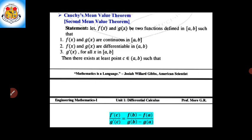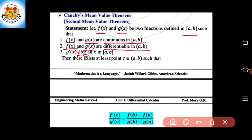Before that, we will revise the statement of Cauchy's Mean Value Theorem. Here, f(x) and g(x) are two functions defined in the closed interval [a, b], such that f(x) and g(x) are continuous in the closed interval [a, b].